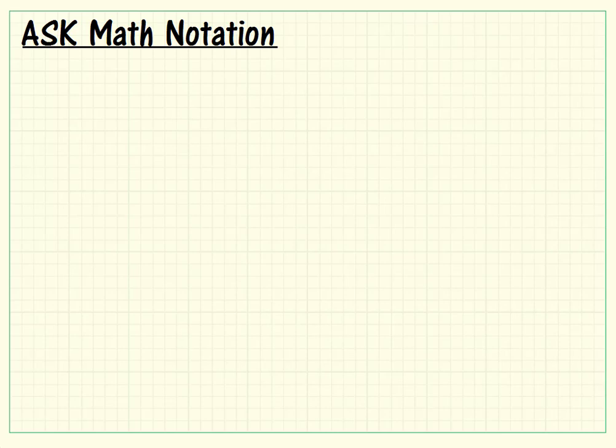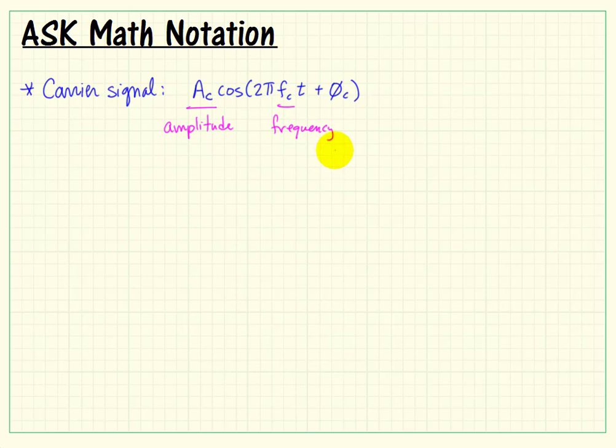Let's briefly review the mathematical notation to be used in this project for amplitude shift keying. Considering the carrier signal, we have the amplitude A sub c, the carrier frequency in hertz, and the carrier phase phi sub c.